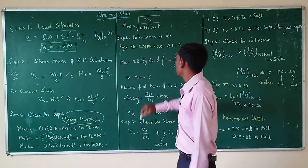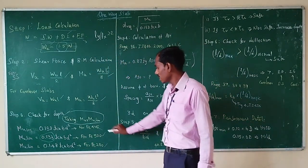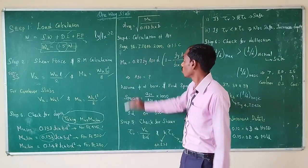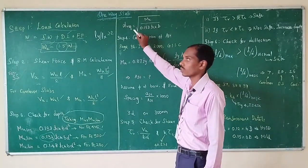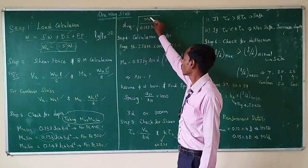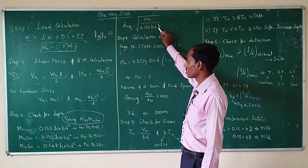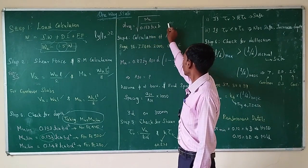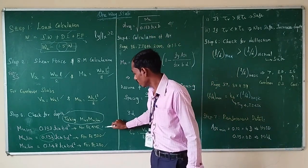For Fe 415 grade steel, the required effective depth of the slab is calculated as: d = √(MU / (0.138 × fck × b)). This formula is derived from equating MU to MU limit.